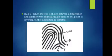Rule 3: when there is a choice between a bifurcation and another type of delta equally close to the point of divergence, the bifurcation is selected. In this figure, we have two deltas — a bifurcation and a dot. According to this rule, we choose the bifurcation as our delta.